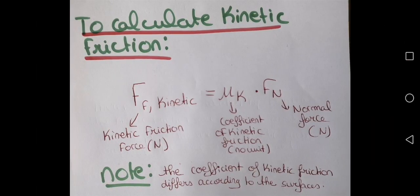To calculate kinetic friction, you use the following equation: FF kinetic, which is the kinetic friction force measured in newtons, is equal to UK — the coefficient of kinetic friction, which has no unit — multiplied by Fn, which is the normal force, also measured in newtons, like all forces.